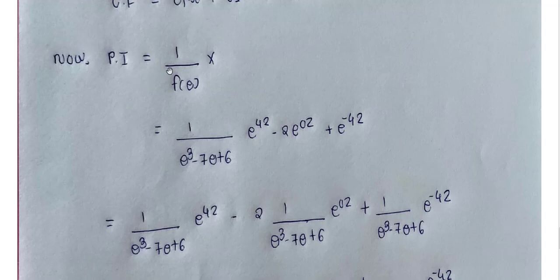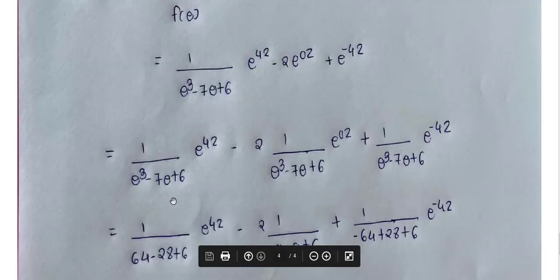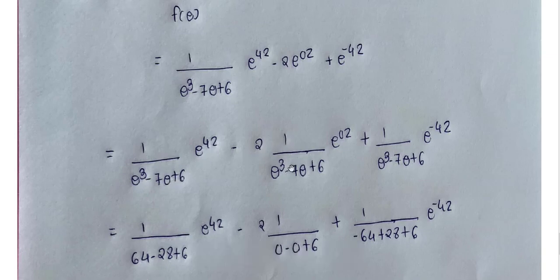Now PI = 1/F(θ) · [e^(4z) − 2e^(0z) + e^(−4z)] = 1/(θ³−7θ+6)·e^(4z) − 2·1/(θ³−7θ+6)·e^(0z) + 1/(θ³−7θ+6)·e^(−4z). Putting θ = 4: 64 − 28 + 6 = 42. Putting θ = 0: 0 − 0 + 6 = 6. Putting θ = −4: −64 + 28 + 6 = −30.